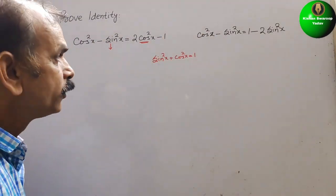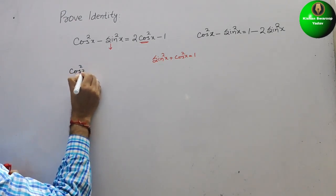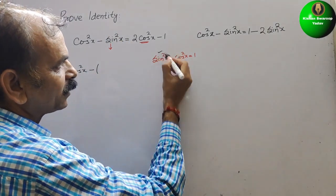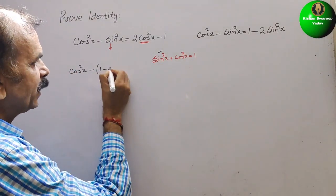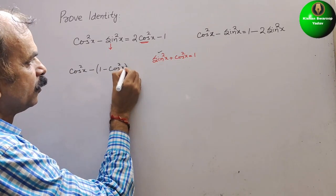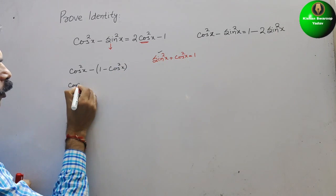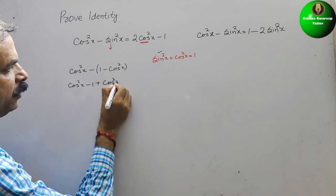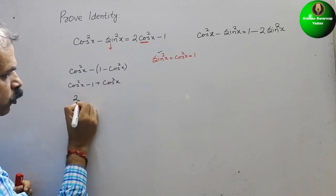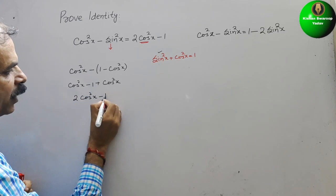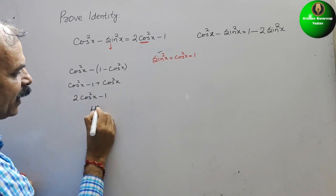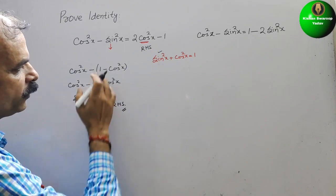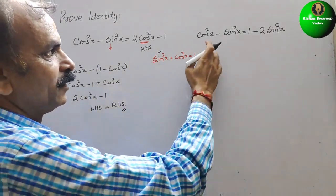Now take cos²x − sin²x. We will substitute sin²x = 1 − cos²x in the bracket. So it becomes cos²x − (1 − cos²x). Solving this: cos²x − 1 + cos²x = 2cos²x − 1. This is the LHS and this is the RHS, both are equal. Hence proved.